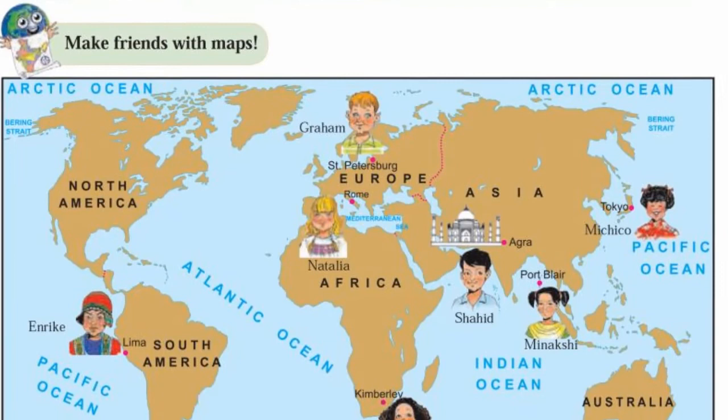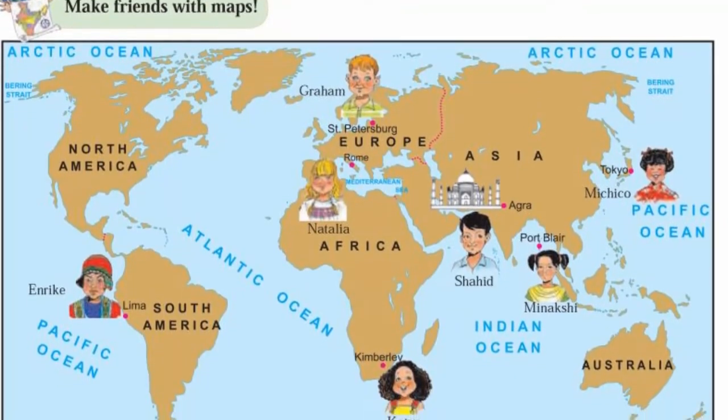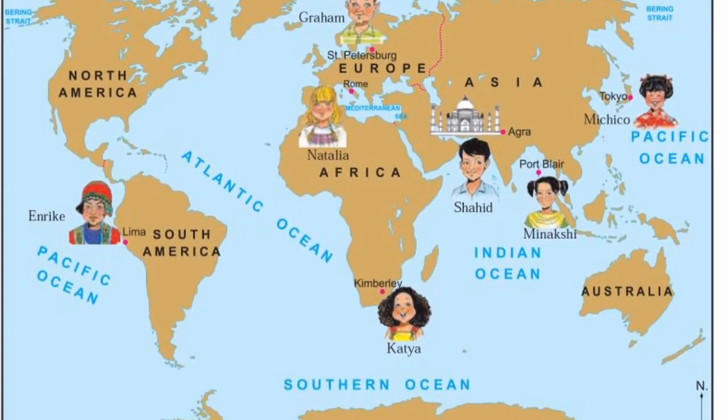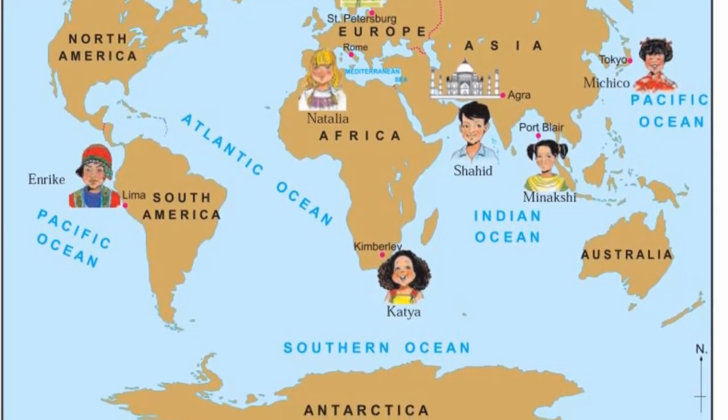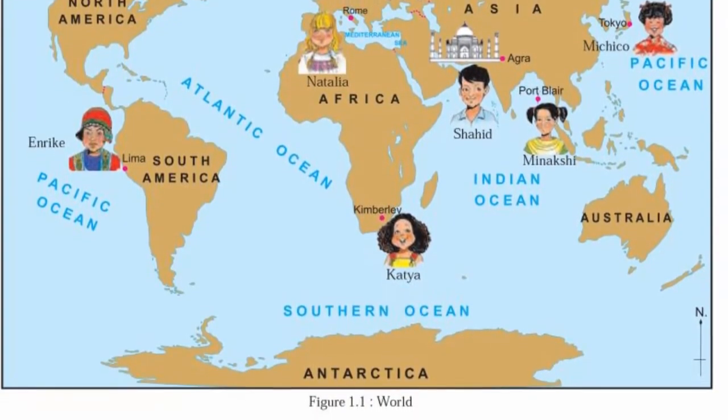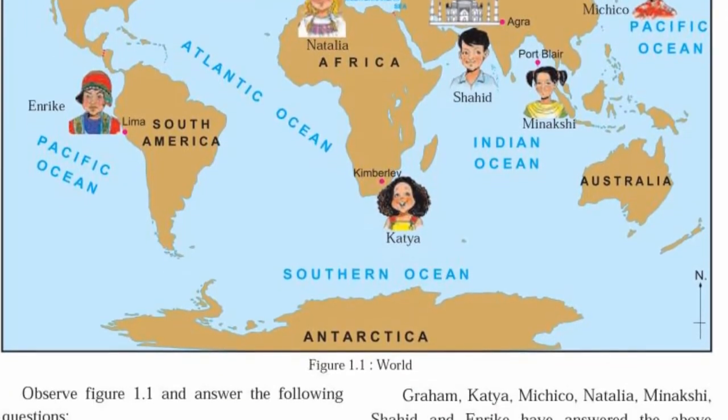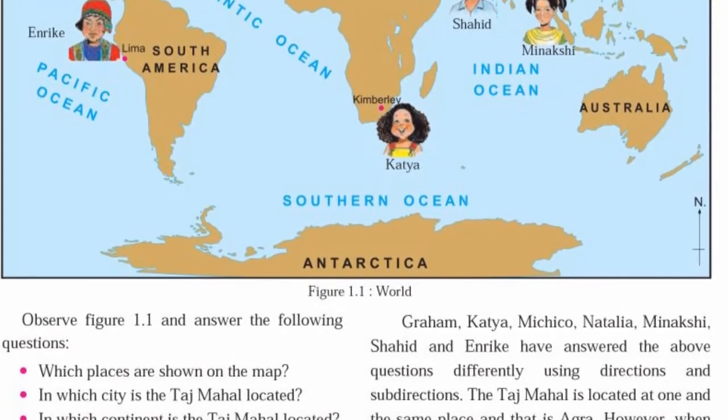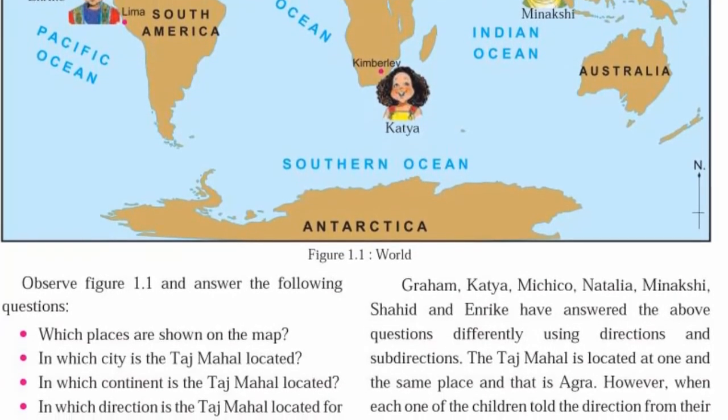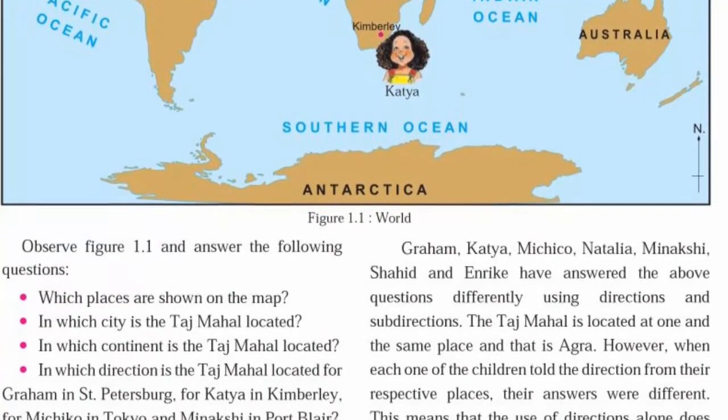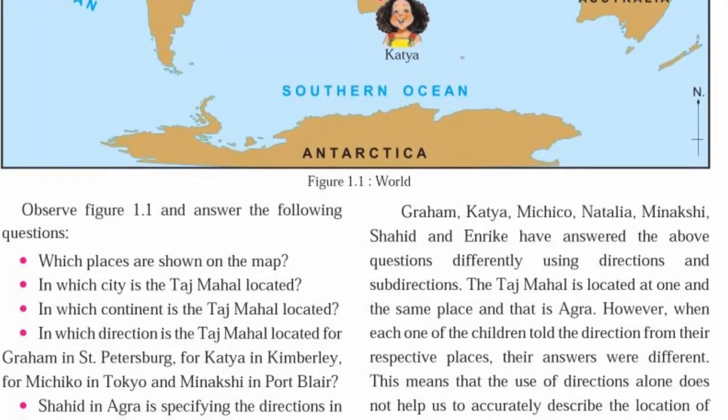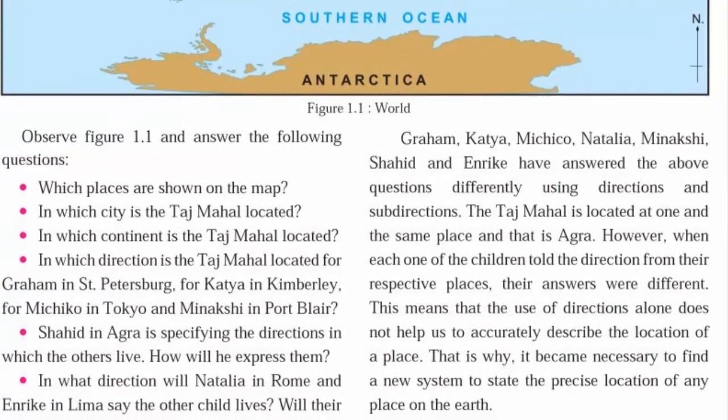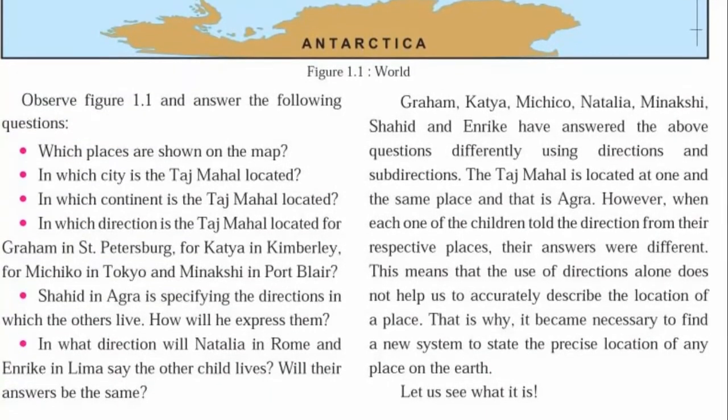Limitation of directions and sub-directions in determining the location of a place. Any monument is located at a particular place on the earth. However, when people from different places tell its direction from their respective places, the use of directions and sub-directions alone does not help us to accurately describe the location of a particular place on the earth.